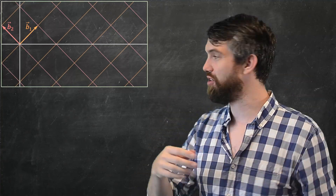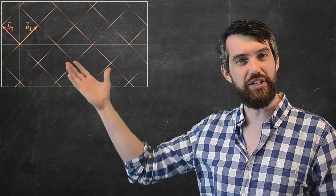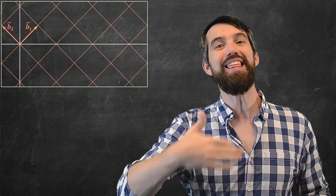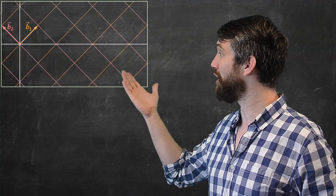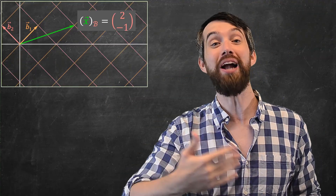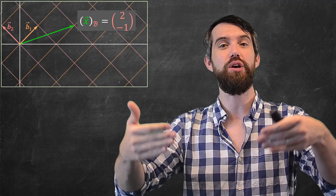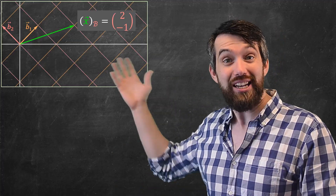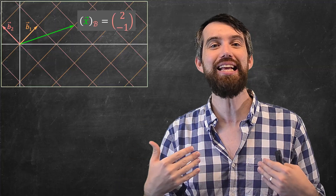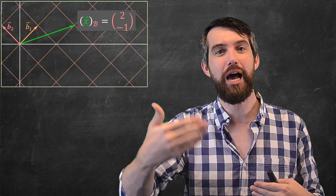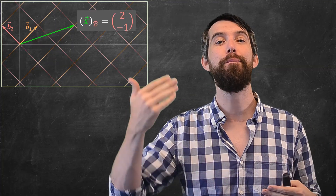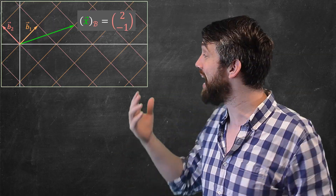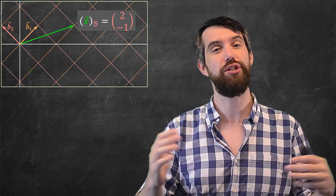Suppose I have some basis with b1 and b2 that define a coordinate system. In that coordinate system, I can take some particular vector and write it in the b coordinate system. This x vector is located at the spot that is two steps along b1 and minus one step along b2, which is why we write x in the b basis as (2, -1).